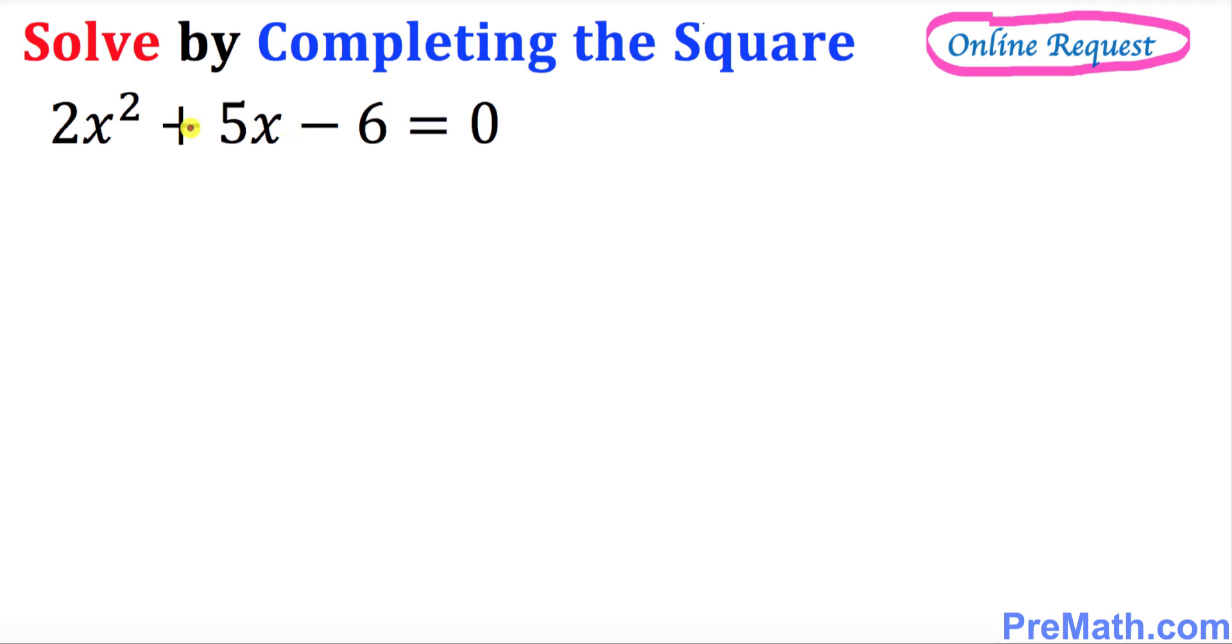The very first step is that we must have only x variables on the left hand side. That means this negative 6 must go on the other side. We're going to add 6 on both sides.